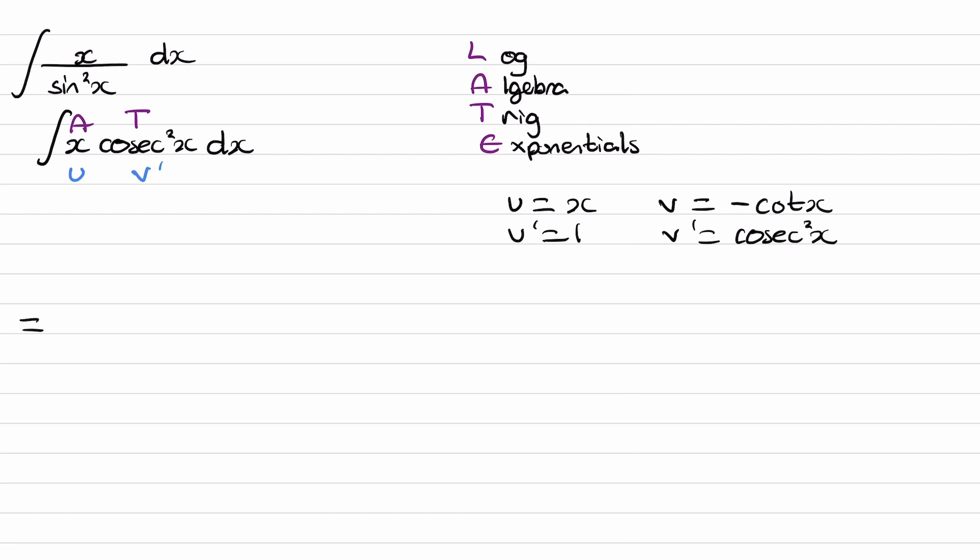We can then put this into our equation, so it becomes u times v, which would be minus x cot x, minus the integral of v, u dash. So 1 times minus cot x, which is just minus cot x. The minus minus becomes plus. And the integral of cot x would be ln of sin x.